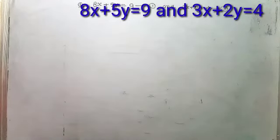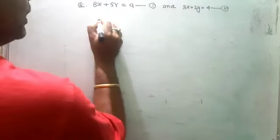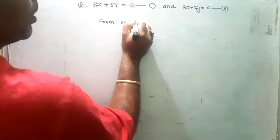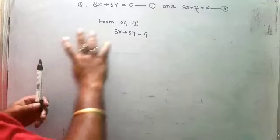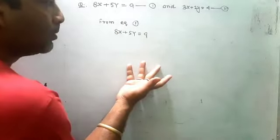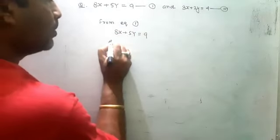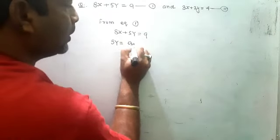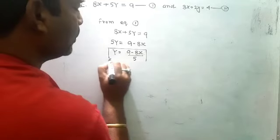One more question: 8x plus 5y is equal to 9 and 3x plus 2y is equal to 4. You have two equations and you are using substitution method. From equation one, it depends on you what you find — x in terms of y or y in terms of x. Suppose we find y in terms of x: 5y is equal to 9 minus 8x, so y is equal to 9 minus 8x by 5. This is equation three.